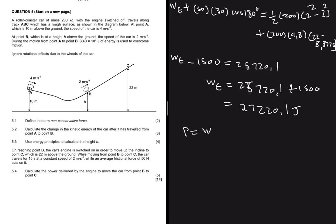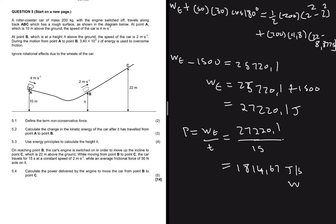Power delivered by the engine: P = W/t = 27220.1 ÷ 15 ≈ 1814.67 watts (joules per second). That is it for this question. Try doing these questions by yourself before watching my solution. A key question to consider is when to use which energy equation — I'll do a separate video on that, so make sure you subscribe so you don't miss out.